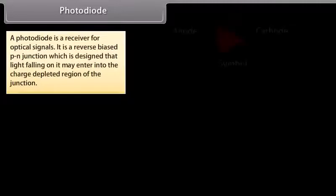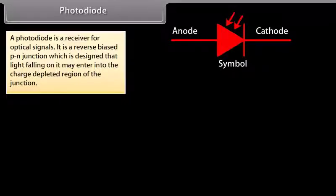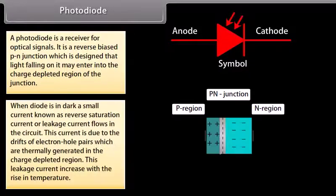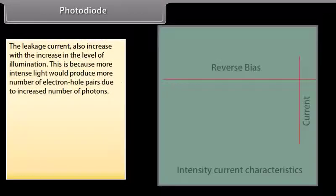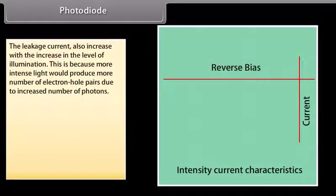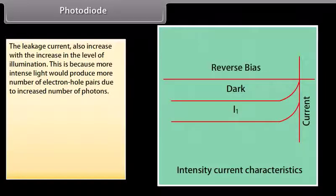Photodiode: A photodiode is a receiver for optical signals. It is a reverse biased P-N junction designed so that light falling on it may enter the charge depleted region. When the diode is in the dark, a small reverse saturation current or leakage current flows. This current increases with temperature and also with the level of illumination, because more intense light produces more electron-hole pairs due to increased photons.